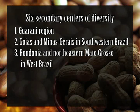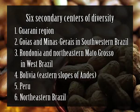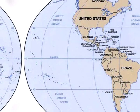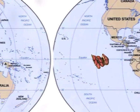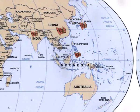Further secondary centers of diversity include Bolivia on the eastern slopes of the Andes, Peru, and northeastern Brazil. Groundnut is an ancient crop of the New World, widely grown in Central and South America, Mexico, and the West Indies. Spanish and Portuguese traders are believed to have carried the plant to the Old World. Two-seeded varieties are considered native of Brazil, from where they were introduced to West Africa. The three-seeded variety has its origin in Peru, from where Spaniards took it across the Pacific to the Philippines, and from there it was introduced to China, Japan, Malaysia, Indonesia, India, and East Africa.